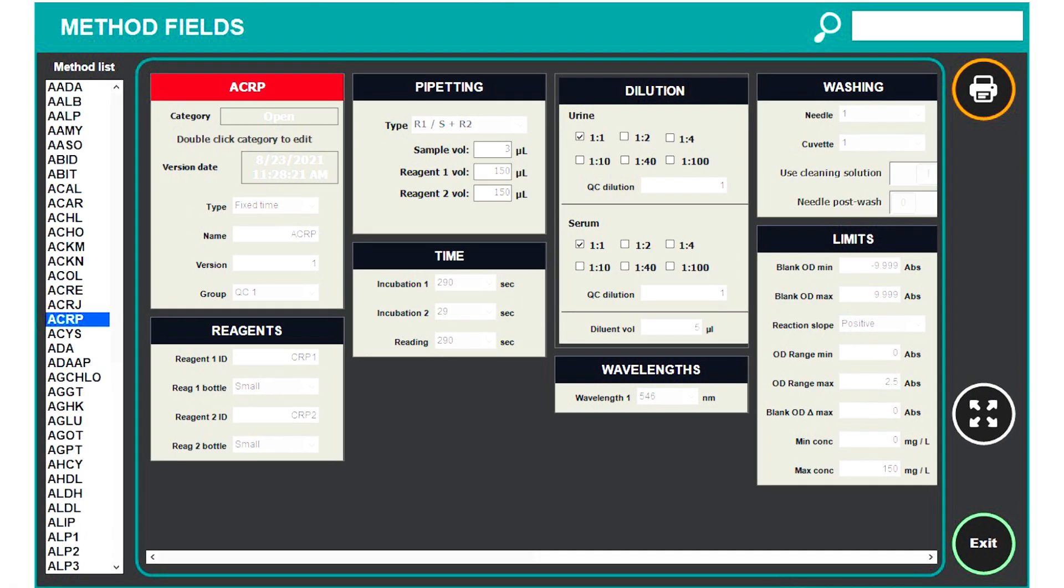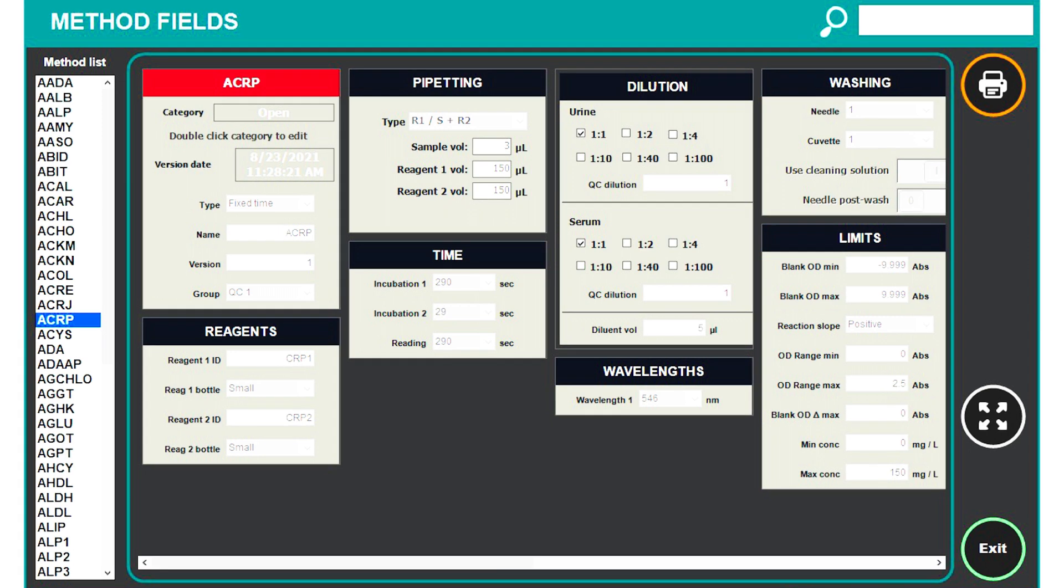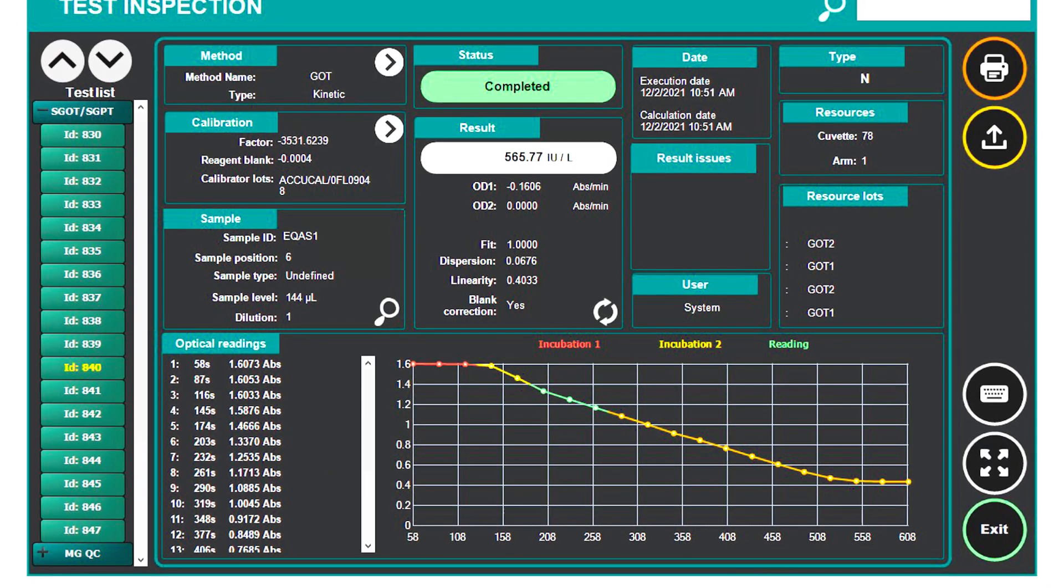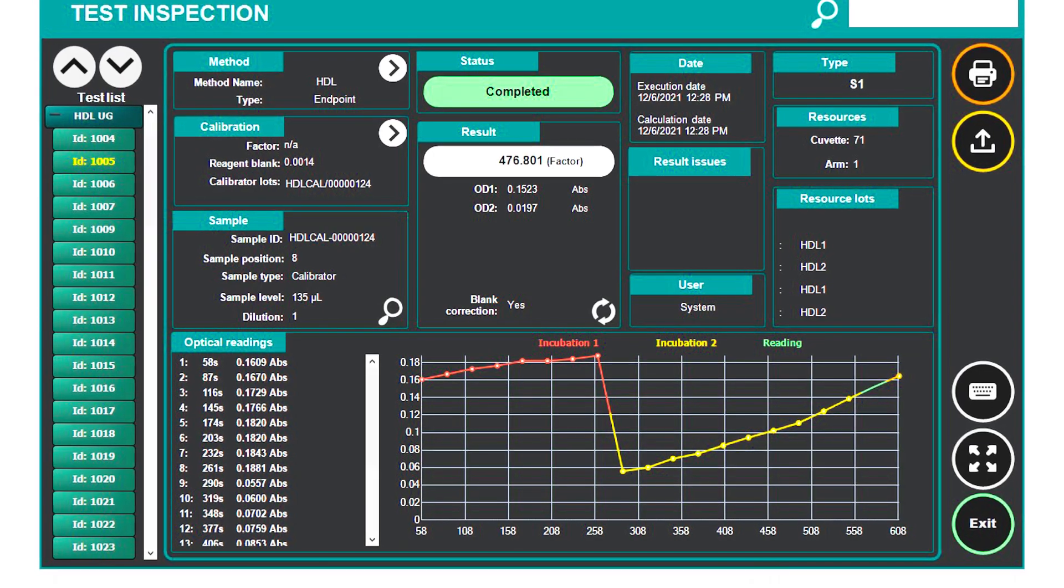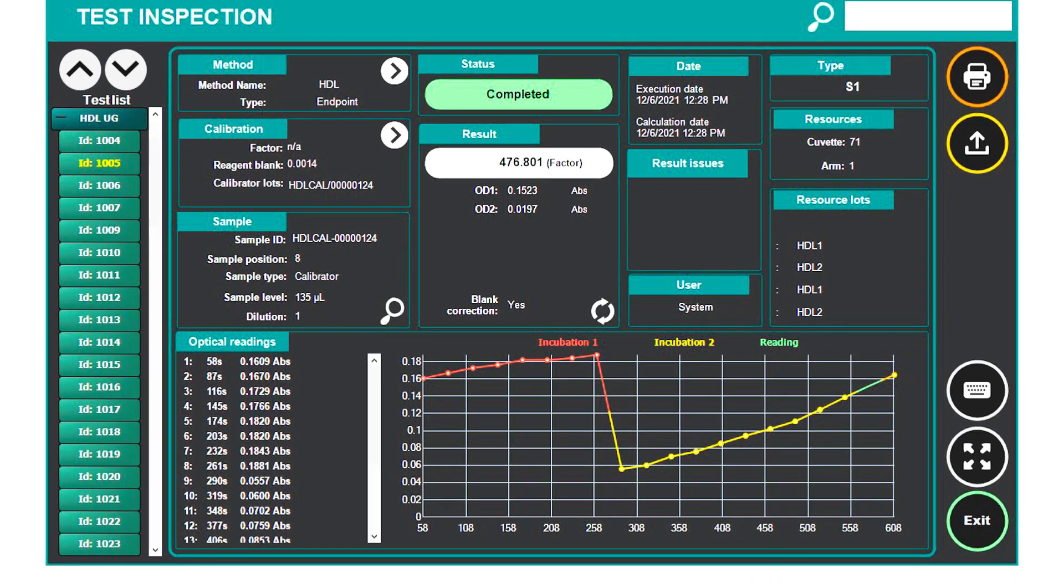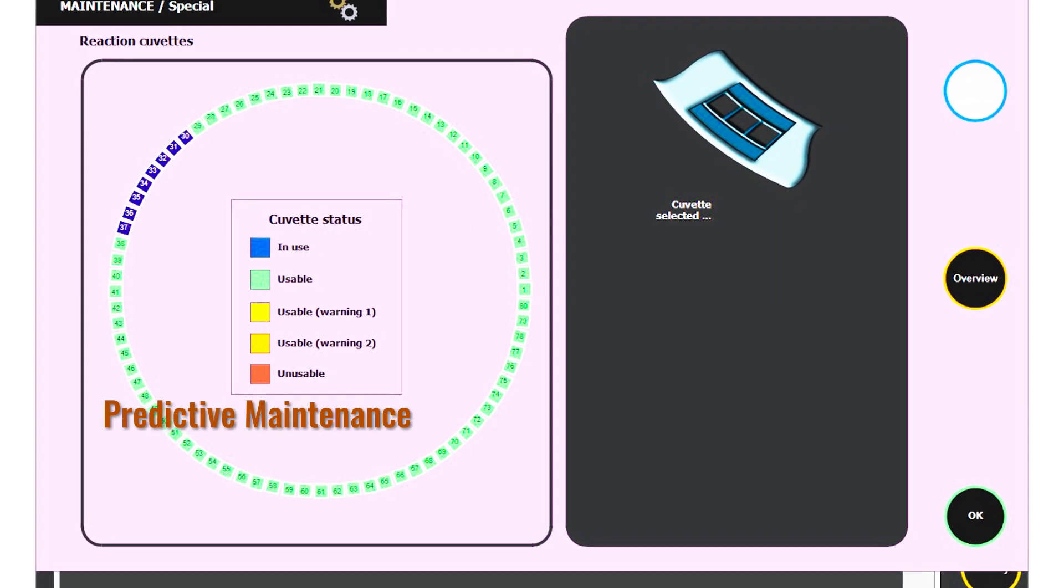Recalculation of results for the last 24 hours based on fresh calibration saves time, as well as costs of re-running the tests. The smart software on the Spera allows for predictive maintenance.